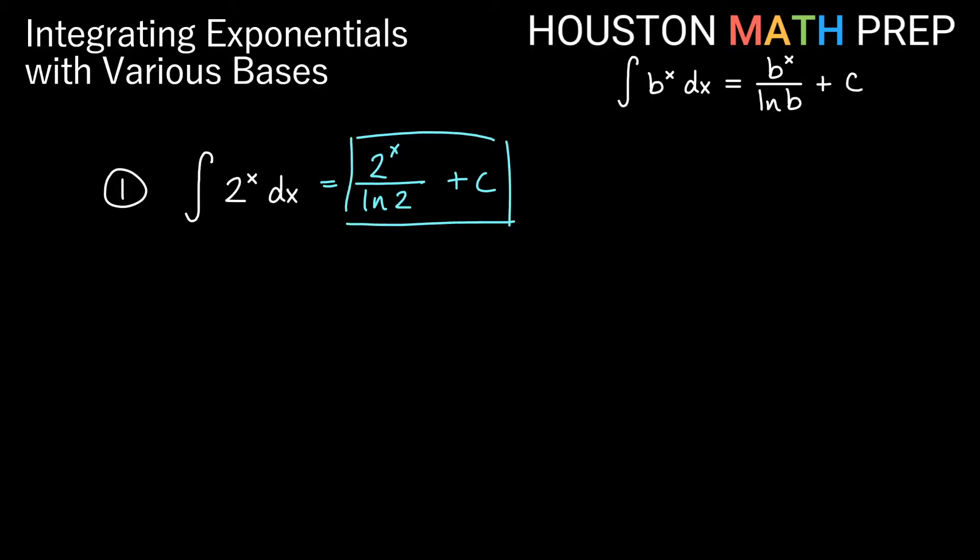Let's move on to the second one. If we have the integral of 10 to the x dx, a similar thing happens. We get 10 to the x itself. We divide by ln of the base, so we get divide by ln of 10. We don't forget our plus c, and that one is also complete.